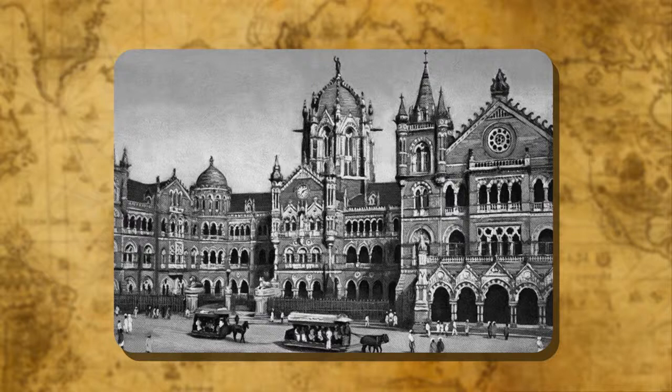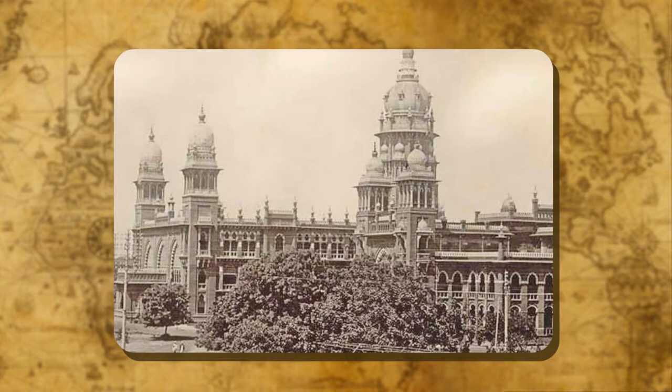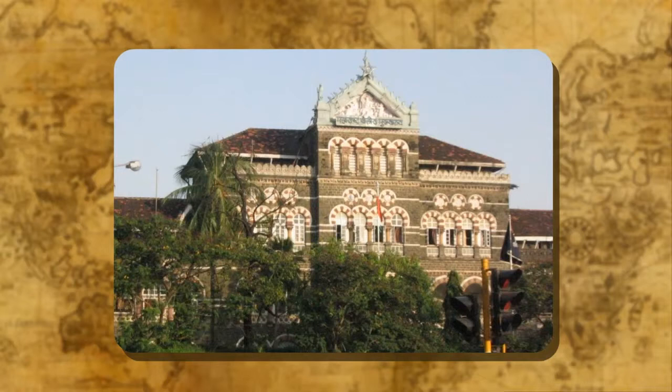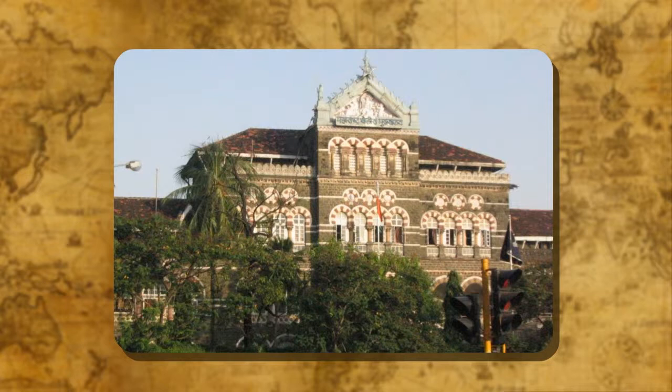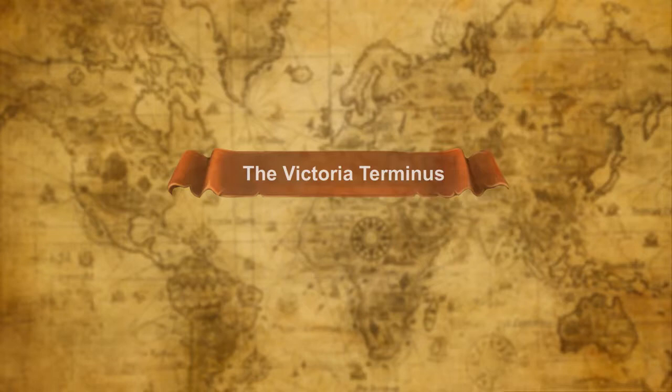Mumbai (formerly Bombay) and Chennai (formerly Madras) were declared as the presidency towns under British rule. Soon, these two places became a hub of cultural activities, along with political and commercial activities, and made good progress in the field of performing arts like music. We still find a large number of architectural structures in Bombay which remind us of the old days of the colonial rulers. They are all made in the Indo-European style, depicting a combination of features of European and Indian architecture.